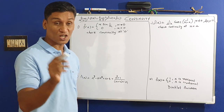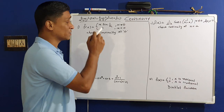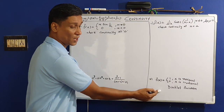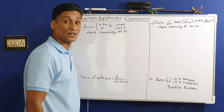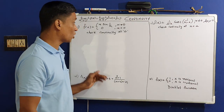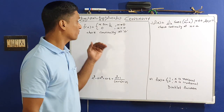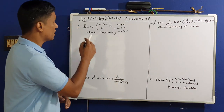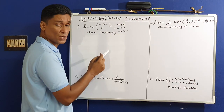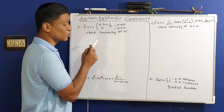We are going to talk about three problems. The first problem is: f(x) equals x·sin(1/x) for x not equal to 0, and equal to 0 for x equal to 0.